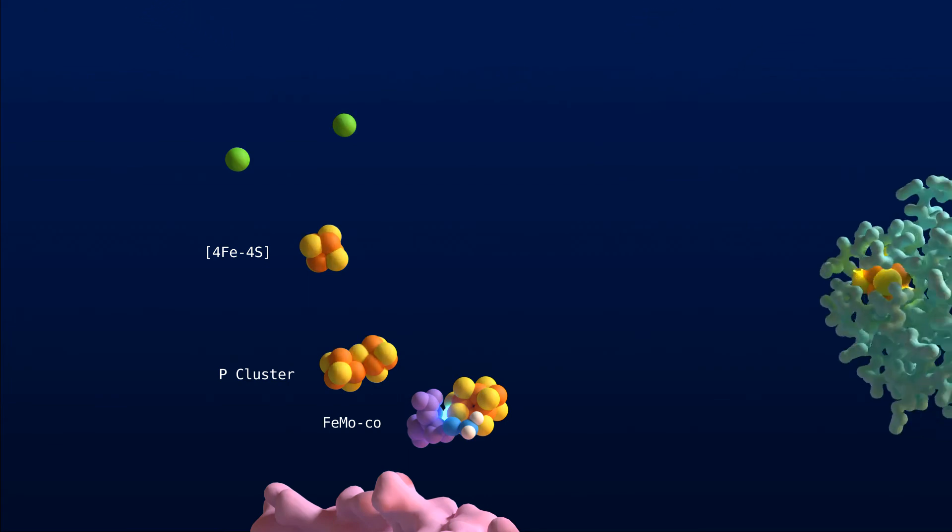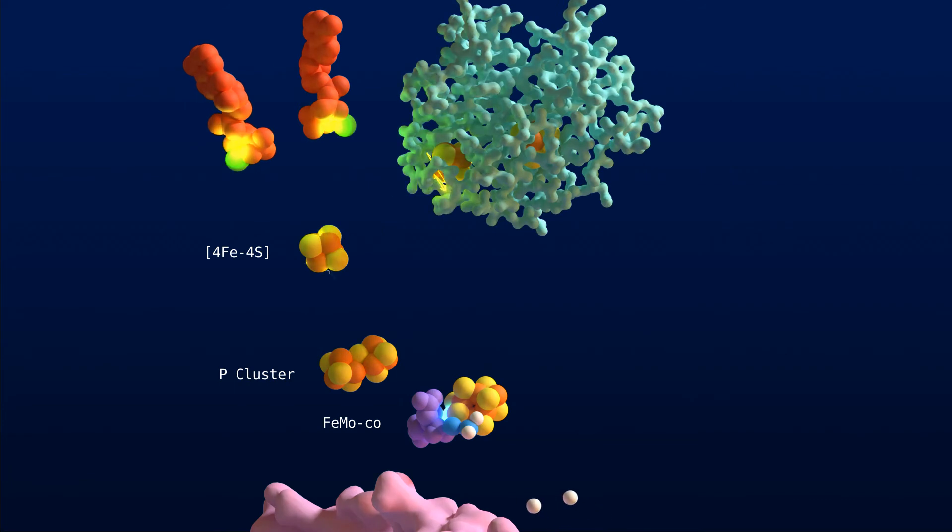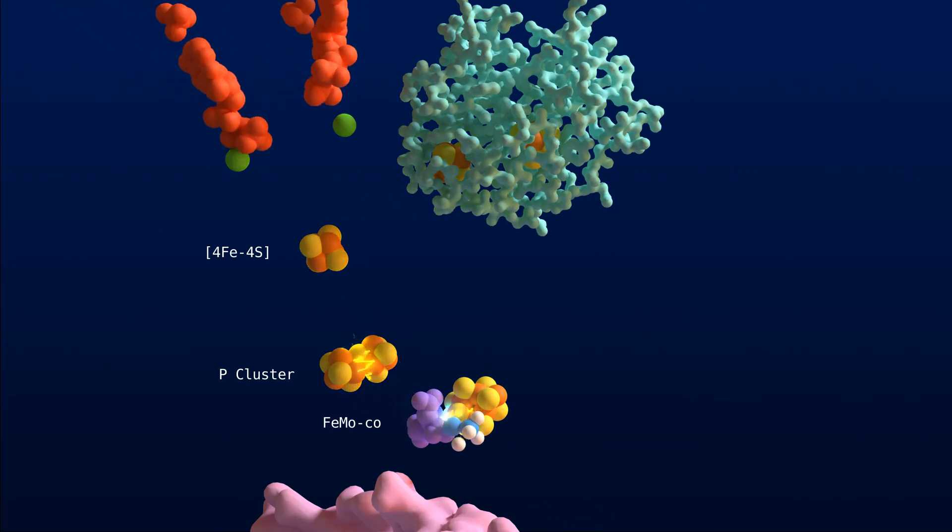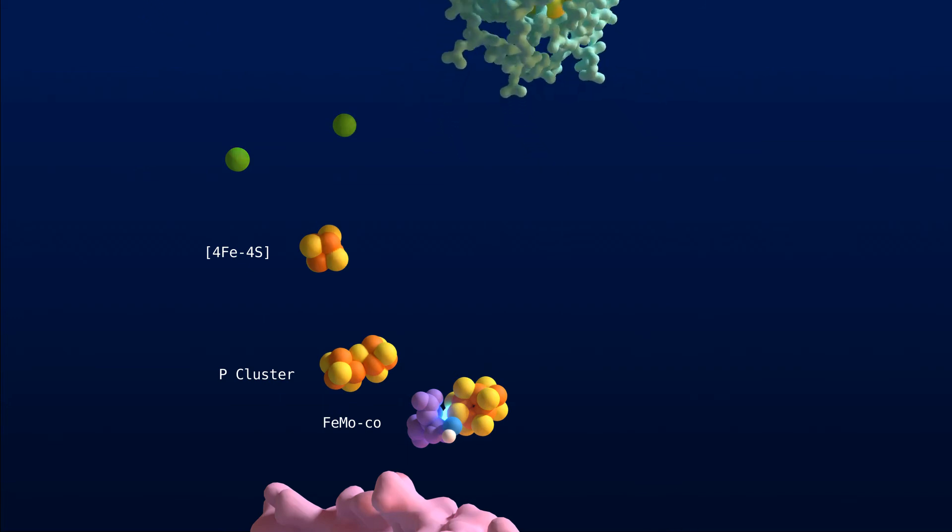The FeMo cofactor at the bottom is where the action happens. The molybdenum ion binds to nitrogen, pulling electron density towards one side of the N2 molecule. This leaves the other nitrogen atom deficient and more reactive to electrons, forced into it by the enzyme.